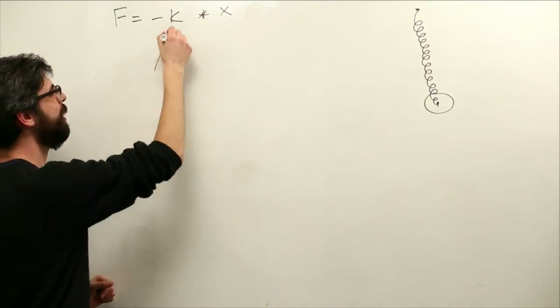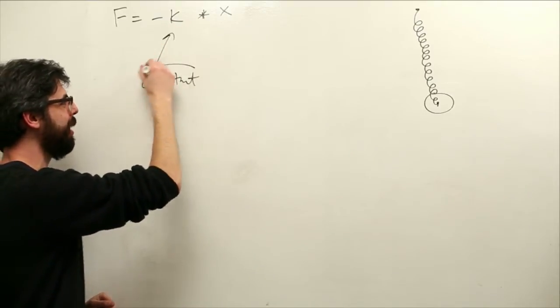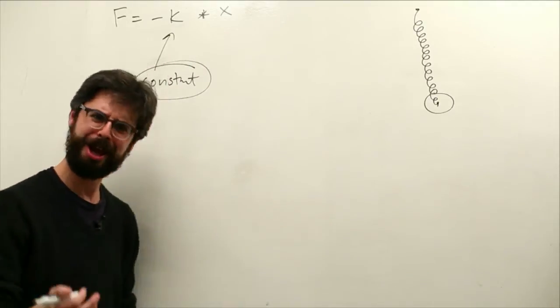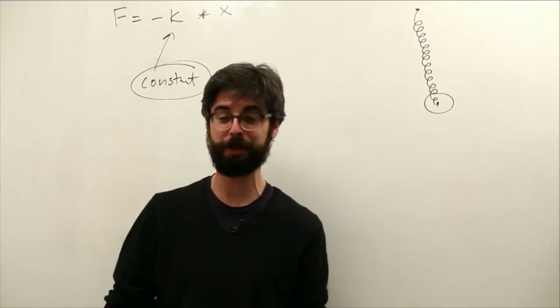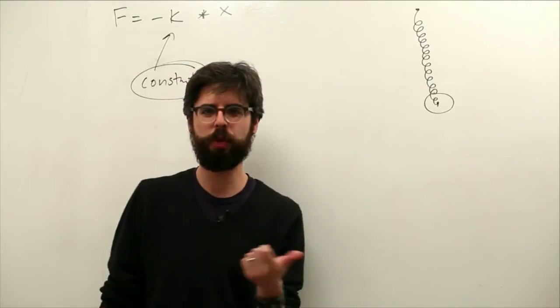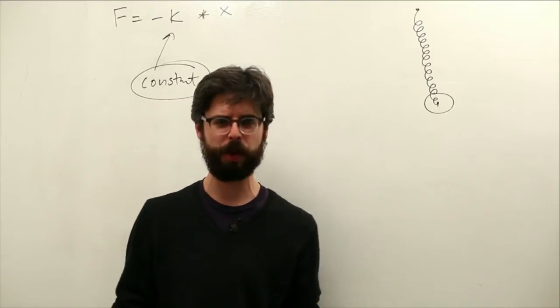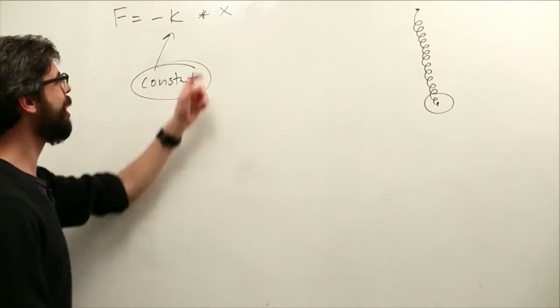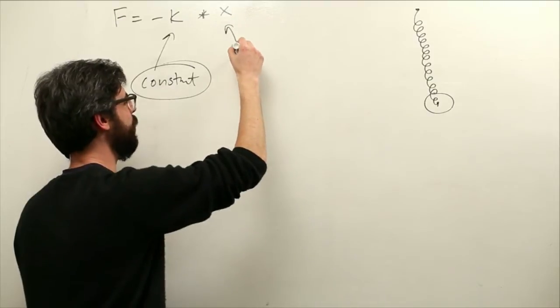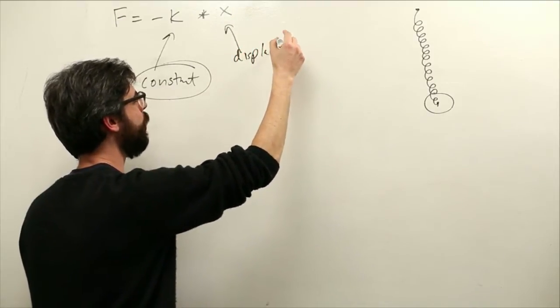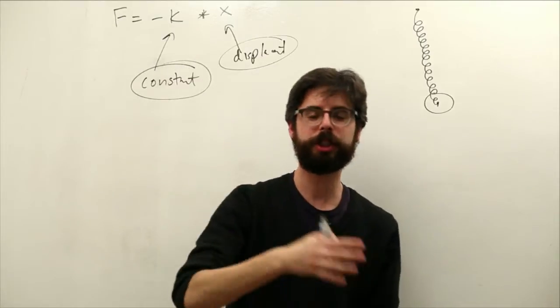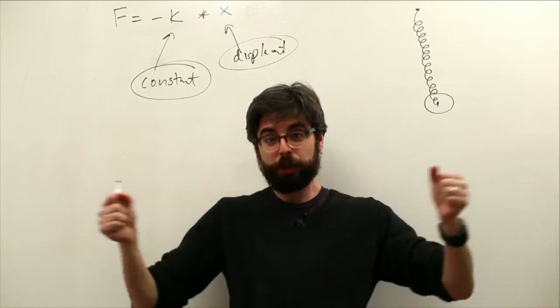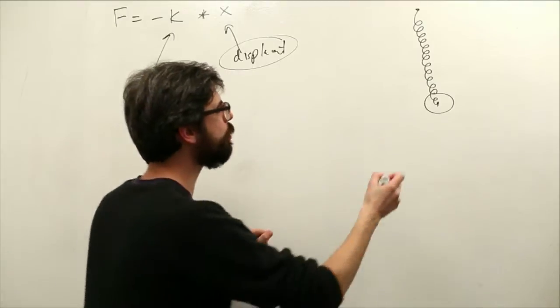So what are these values? We've got a constant, K is a constant. It probably has some real-world numbers for different kinds of springs, but for us it's just allowing us to tweak the behavior of our spring. Is it a really elastic spring or is it kind of a rigid spring? Try a higher constant, try a lower constant. What is X? X is the displacement. We talked about the force of the spring being proportional to the extension of the spring.